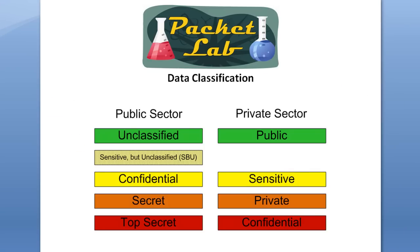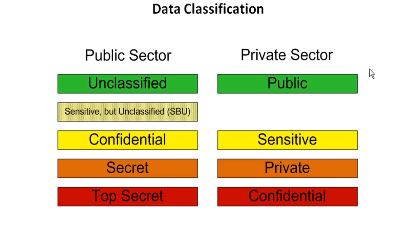Here's a graphic that shows a comparison between the public and private sector data classification structures. Unclassified is analogous to public. Sensitive but unclassified is that unclassified information that has some restrictions on it within the public sector. Then the three tiers of classified information are analogous to each other: confidential equals sensitive in the private sector, secret equals private, and top secret equals confidential. The only goofy bit here is that the highest level private sector classification shares the same name as the lowest level public sector classification, so don't trip up on that — I could see that being great fodder for an exam question.